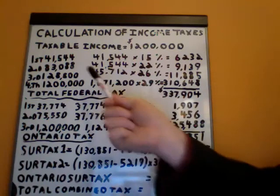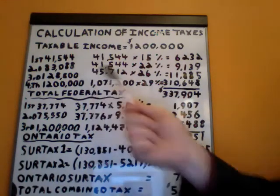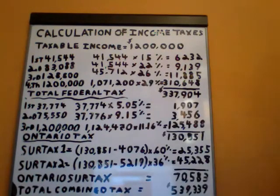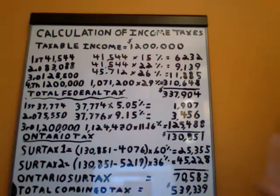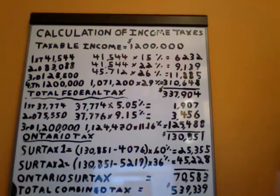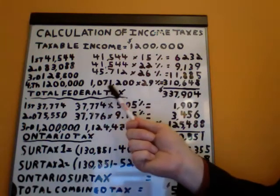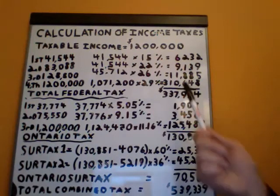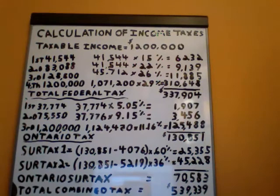The third bracket goes all the way up to $128,800, so the difference between that and the last bracket is $45,712. You multiply that by 26%, which is the third bracket rate, giving you total tax of $11,885 for that bracket. The fourth bracket here in Canada is 29%, so all income above $128,800 is taxed at 29%. That works out to $1,071,200, multiplied by 29%, giving us $310,648, for a total federal tax balance of $337,904.